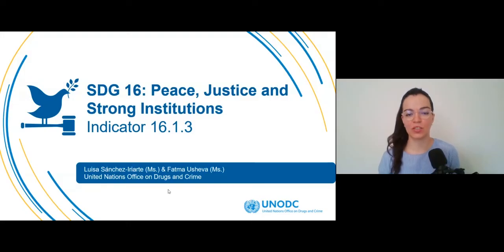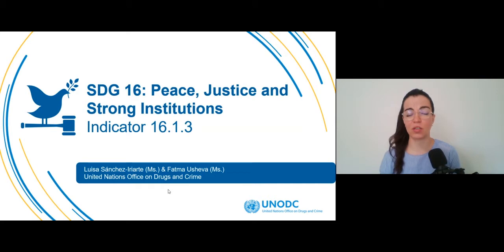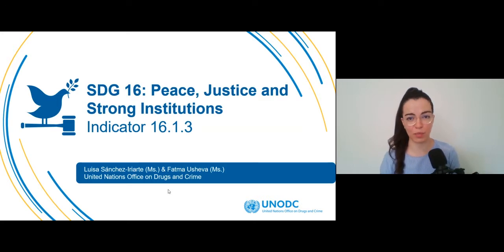Welcome to this brief presentation of SDG Indicator 1613. Violence, insecurity, weak institutions, and limited access to justice remain a great threat for sustainable development. In response, member states and the international community have committed to promote peaceful and inclusive societies, provide access to justice for all, and build effective, accountable, and inclusive institutions at all levels as part of the 2030 Agenda for Sustainable Development.